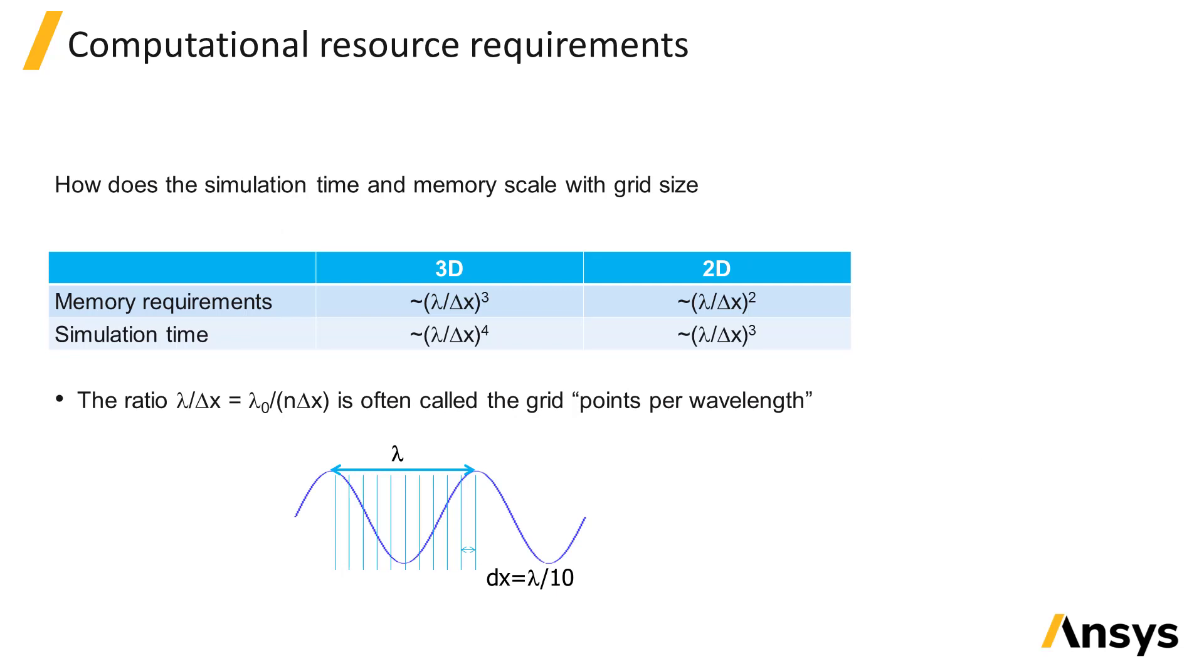It is important to think about how the memory and simulation time scale with the grid size. If we assume that the spatial grid size is uniform and that delta X is the same as delta Y and delta Z, then the memory requirements for 3D scale like 1 over delta X cubed in 3D and 1 over delta X squared in 2D. This is obviously expected, but what is surprising is that the simulation time increases like 1 over delta X to the fourth power in 3D and to the third power in 2D.